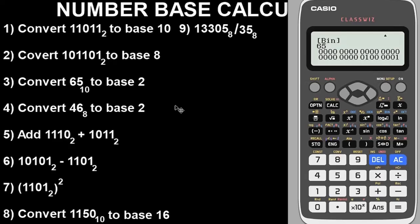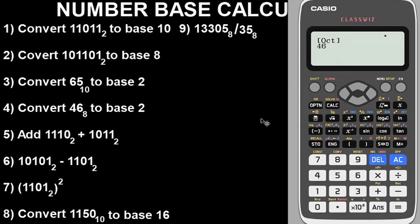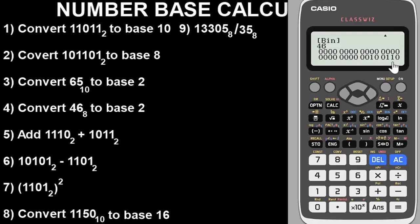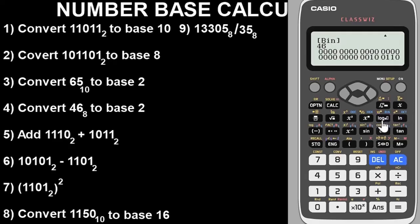Question four says convert 446 base eight to base two. Let's wipe this out and change the mode to Octal by pressing the OCT button. Now in Octal mode, input 4 4 6, then press equals. This is the value in base eight. To change it to base two, press the Binary button. The result is 100110 base two. To go back to the octal value, press the OCT button, and to return to binary, press Binary.